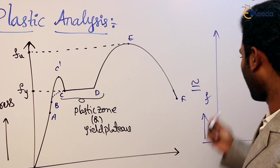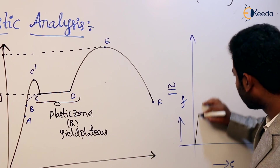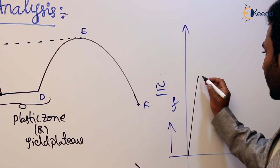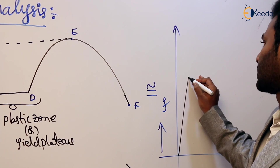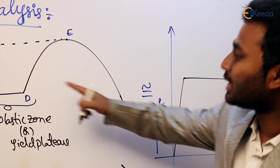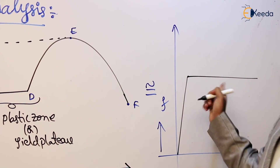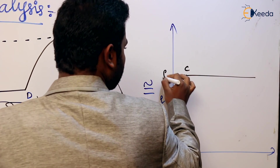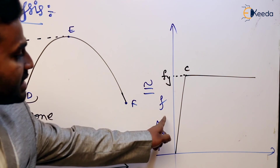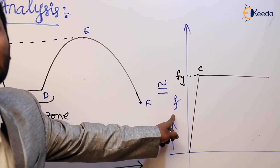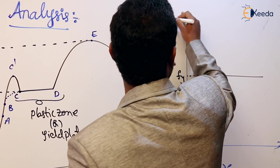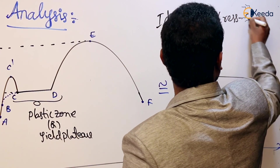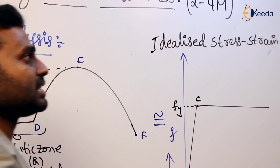If we neglect the upper yield point and strain hardening zone, we consider the graph up to the lower yield point, after which the plastic zone starts directly, and then the strain hardening zone is removed. The resulting modified curve is the idealized stress-strain curve for plastic analysis.